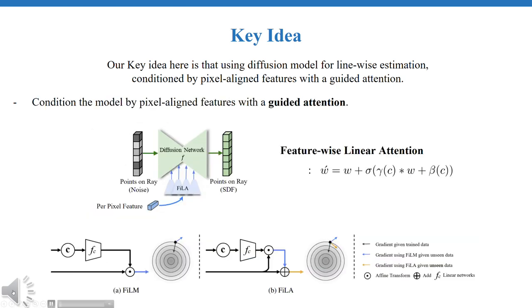Secondly, this reconstruction robustness for unfamiliar images is strengthened by conditioning the diffusion model on image features using guided attention named feature-wise linear attention. By incorporating a feature-wise modulated feature into the existing path of the diffusion model, the model can prevent drastic shifts, thereby avoiding the generation of incorrect gradients when encountering unfamiliar images.